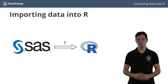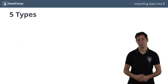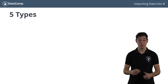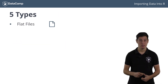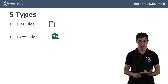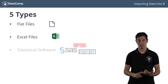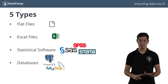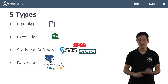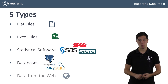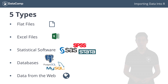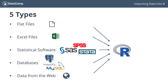More specifically, we will focus on five types of data: data from flat files, from Excel files, from other statistical software, from databases, and finally data imported from the web. Each chapter will focus on each one of these data formats, and you'll learn to convert all of them into an R data frame.